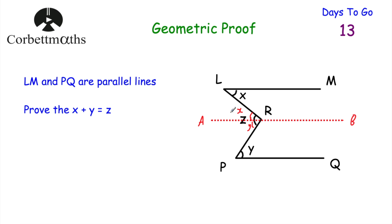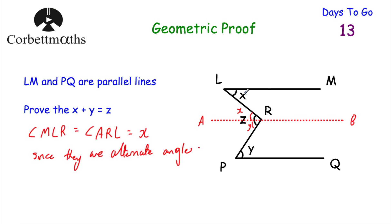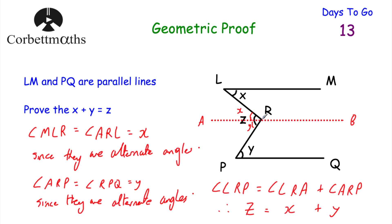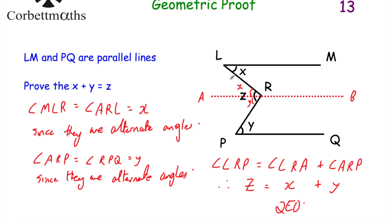It's very important in geometric proof questions that you explain your answer. So: angle MLR equals angle ARL, both equal to X, because they are alternate angles. Next, angle ARP equals angle RPQ, both equal to Y, since they are alternate angles also. Finally, angle LRP — the whole angle — equals angle LRA plus angle ARP, so Z equals X plus Y. That's what we were asked to show. Well done if you got that.